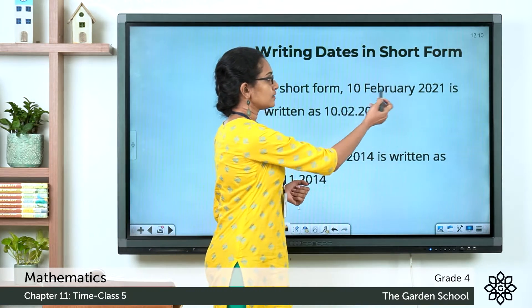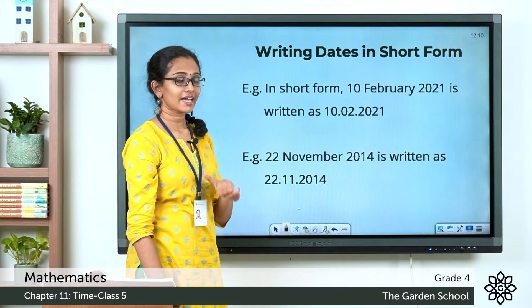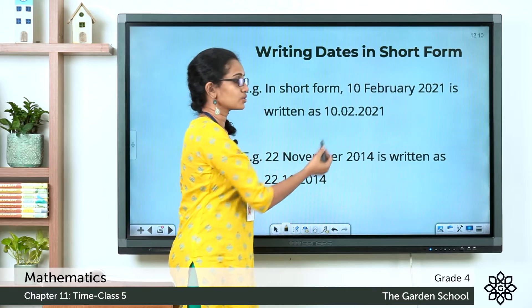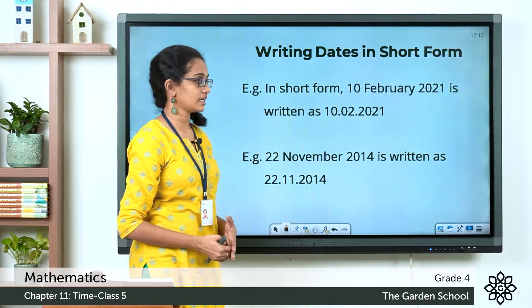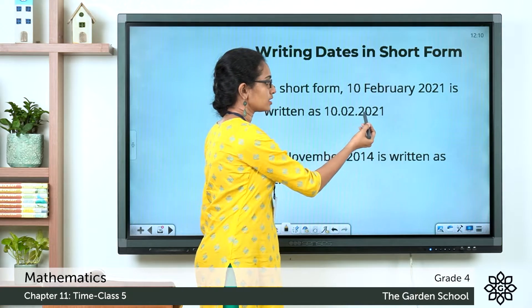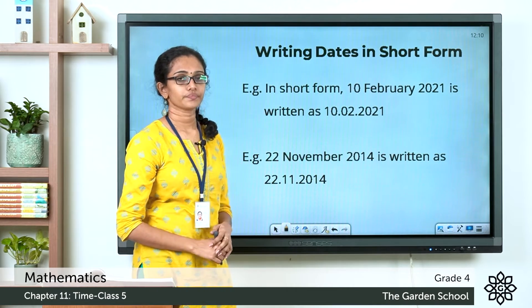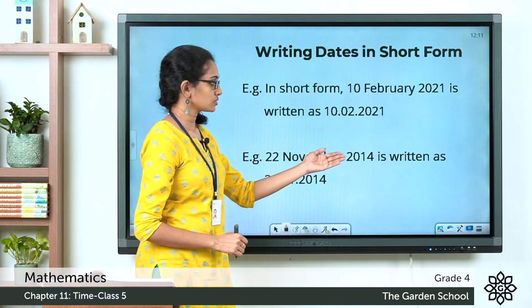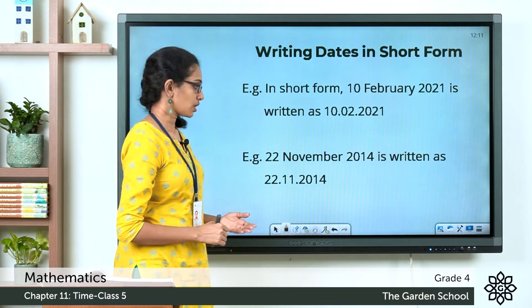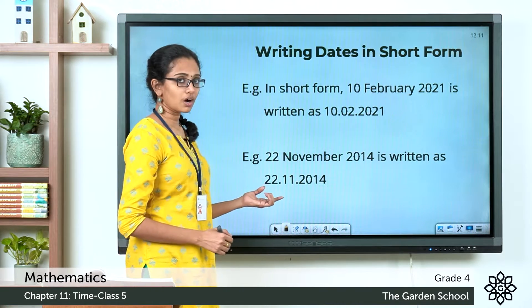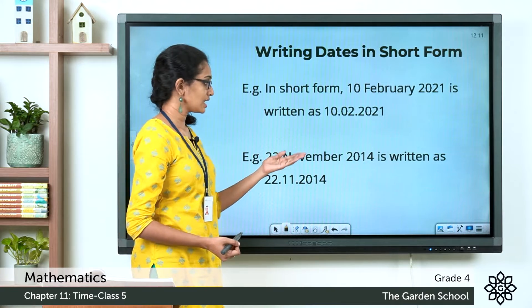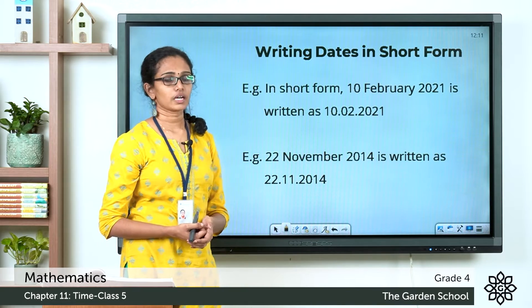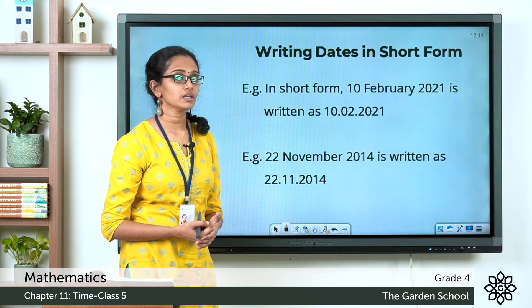For example, 10 February 2021 can be written in short form as 10.02.2021 — where 02 means it is the second month of the year, which is February. Similarly, 22 November 2014 can be written as 22.11.2014 — where 11 means it is the 11th month of the year, that is November.